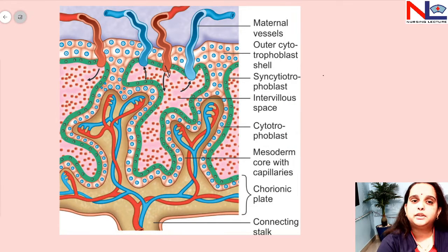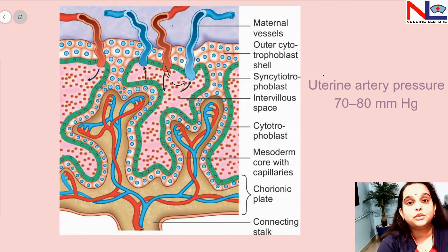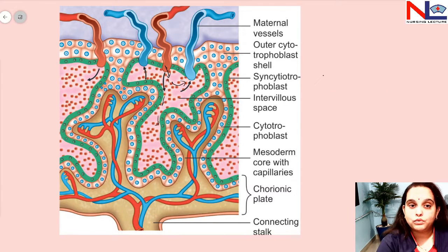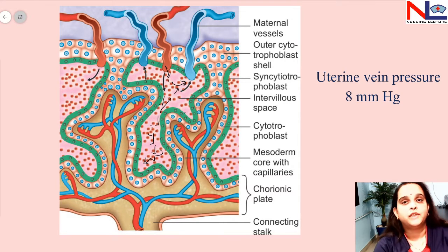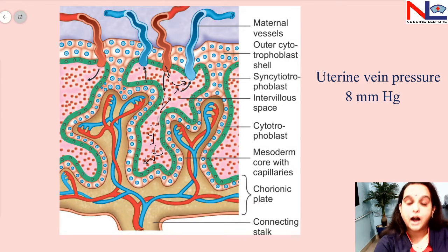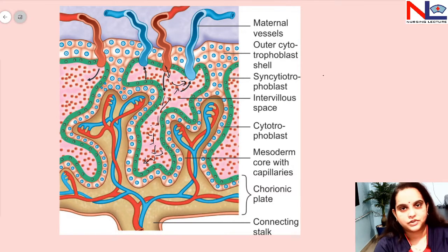As blood comes through the spiral arteries, it does not go directly into the veins because the blood entering the intervillous space is under higher pressure — about 70 to 80 mmHg. With this higher pressure, the blood goes directly downward, and once it touches the chorionic plate it disperses laterally, mixes slowly, then moves upward, and finally drains into the uterine vein. At the time of uterine contraction, the fetus continues to receive nutrition.